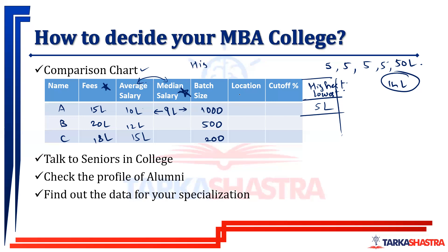Location is also a good parameter. Next: cutoff. Knowing the cutoff percentile is very important. Suppose one college's cutoff is 85 percentile, another is 88 percentile, and another is 80 percentile. Cutoff gives you an idea of whether your peer learning will be good or bad. If a college's cutoff is 80 percentile and you scored 90, then your peers will be weaker than you — they'll learn from you, but you won't learn as much from them. Peer-to-peer learning only happens when your peers are at the same level as you.